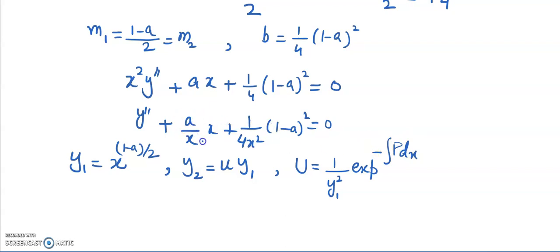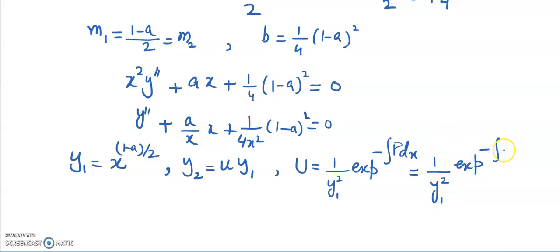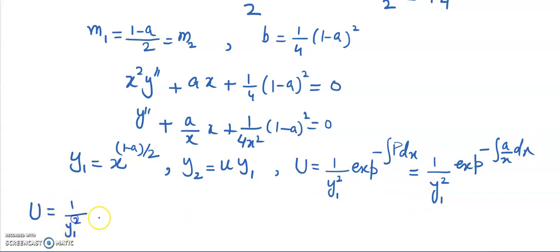Substituting, U = (1/y₁²) · exp(−∫(a/x) dx). The integral of a/x gives a·ln(x), so U = (1/y₁²) · exp(−a·ln x) = (1/y₁²) · x^(−a).